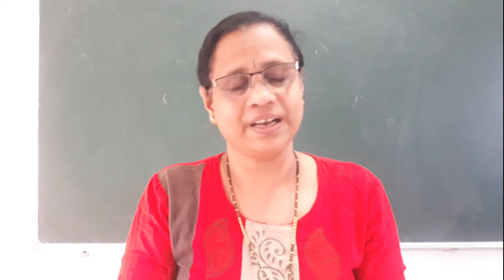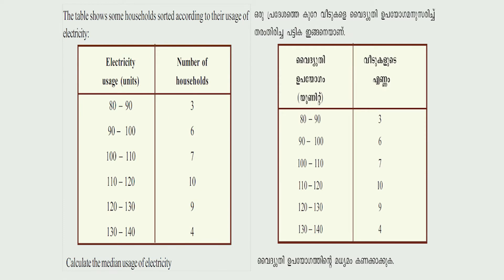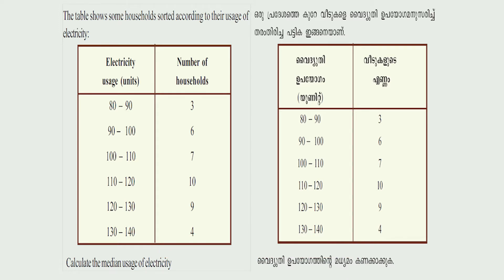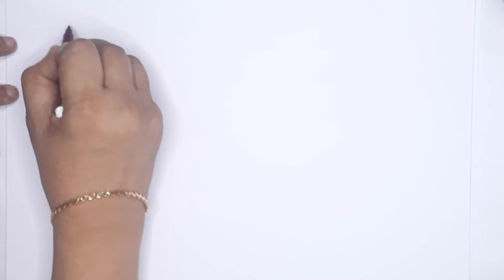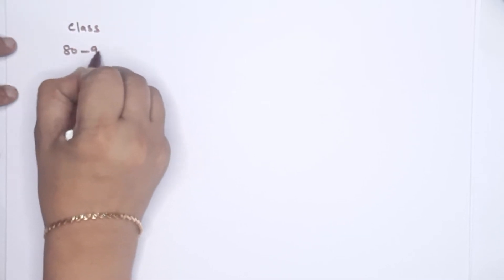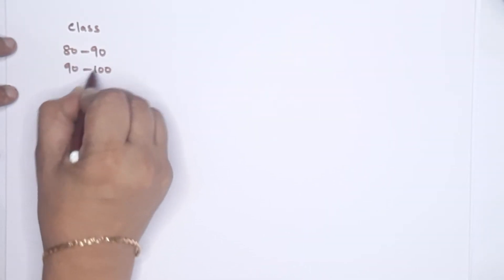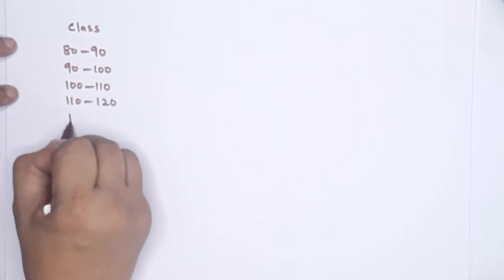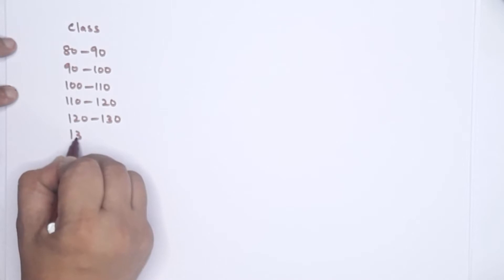We have to take a look at the problem on page number 254, first question. The table shows some households sorted according to their usage of electricity. Calculate the median usage of electricity. The classes are: 80 to 90, 90 to 100, 100 to 110, 110 to 120, 120 to 130, and 130 to 140.